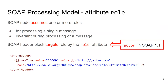We'll start with the role attribute. When a SOAP message is received by an intermediary or any SOAP node, the SOAP node assumes one or more roles in that message processing. The role is identified by a URI, as you can see in the example at the bottom of the slide. That URI is an attribute on the SOAP header block, meaning the SOAP header block targets a specific role. When a SOAP node receives a message and its assumed roles match the roles targeted by the header block, the node needs to process that particular header block.